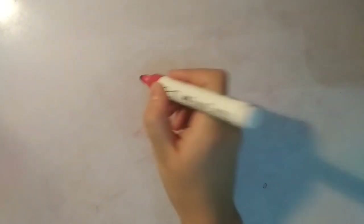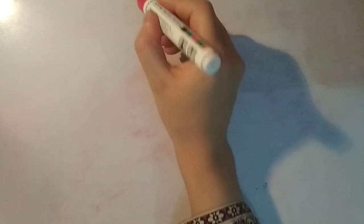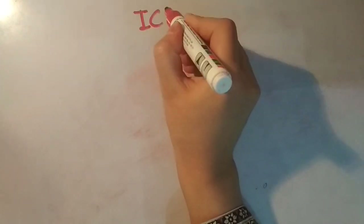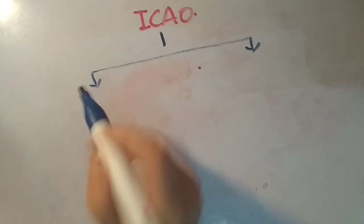There are many organizations that have classified airports, but the most popular classification is by ICAO — the International Civil Aviation Organization, whose headquarters is in Montreal, Canada, and it is a UN agency. ICAO has divided and classified airports into two types of classification, and both types are used for airports.